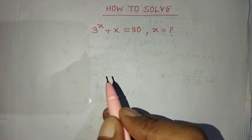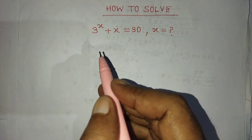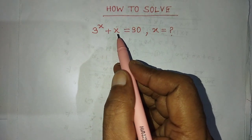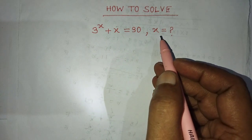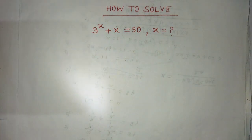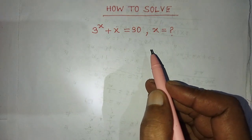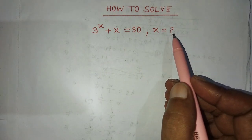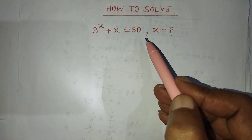Hi guys, welcome back to my channel, Alim Math Blog. So my dear student, today our question is: if 3 to the power x plus x is equal to 30, then find the value of x. Today in this video, I will tell you how to find the value of x from this exponential equation.